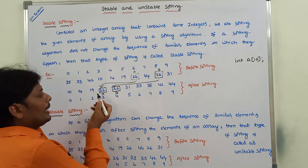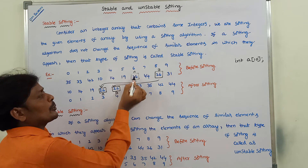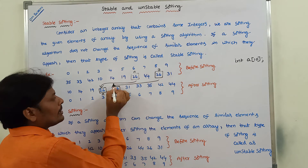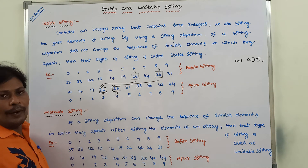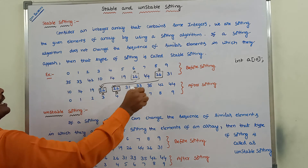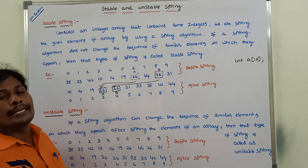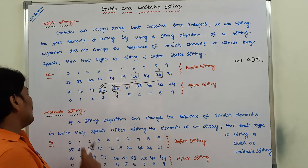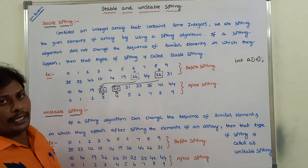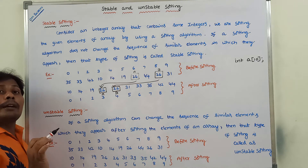In stable sorting, 'a' comes first and 'b' comes later after sorting all the elements of the given array by using the sorting algorithm — the same sequence is maintained. This type of sorting algorithm is called stable sorting. Next is unstable sorting.